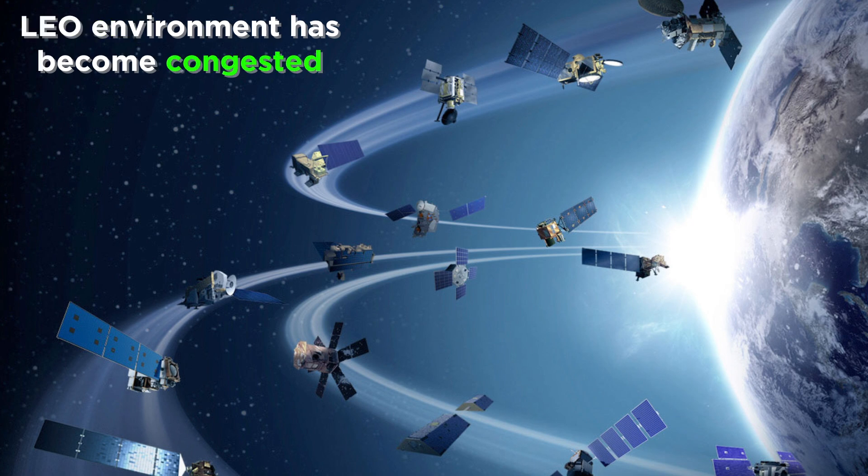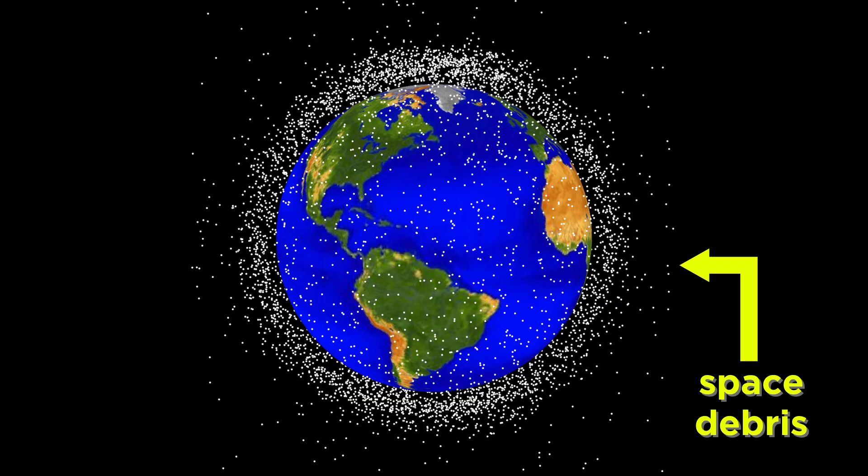The low Earth orbit environment has become rather congested with objects, which has resulted in a lot of space debris. This can be very dangerous, as the probability of collisions becomes much greater, which, given the incredible orbital velocities, can be destructive to any structures and would certainly be deadly to any humans in the way.